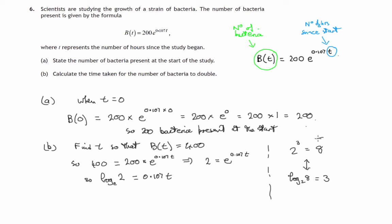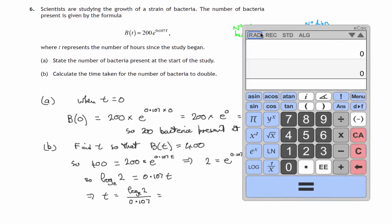So you should be able to convert power statements to log statements. Practice it. We now have to divide both sides by 0.107 to get t on its own. So therefore t would be equal to the left-hand side, log to the base e of 2, divided by 0.107. And for that we'll need to use a calculator.